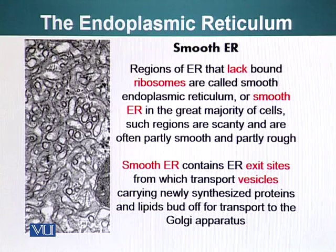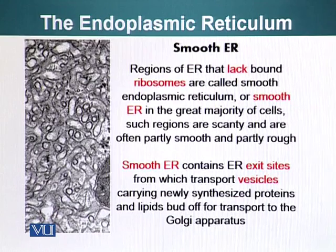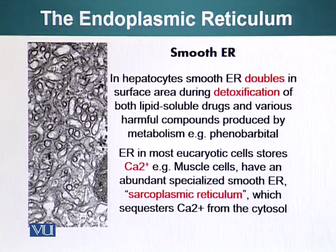Smooth ER contains endoplasmic reticulum exit sites. At these sites, vesicles form and carry cargo in the form of soluble proteins and also proteins embedded in the ER membrane. These vesicles bud off and fuse with the Golgi apparatus. In hepatocytes, smooth ER doubles its surface area during detoxification of lipid-soluble drugs and harmful compounds produced by metabolism — for example, phenobarbital.